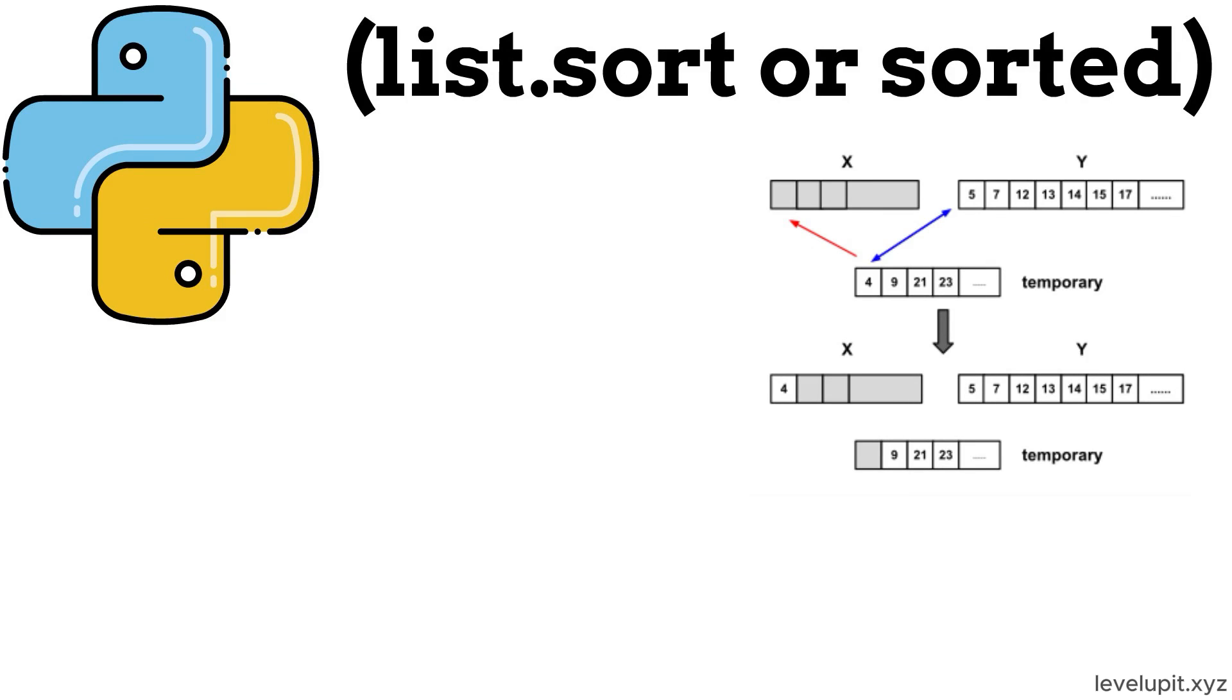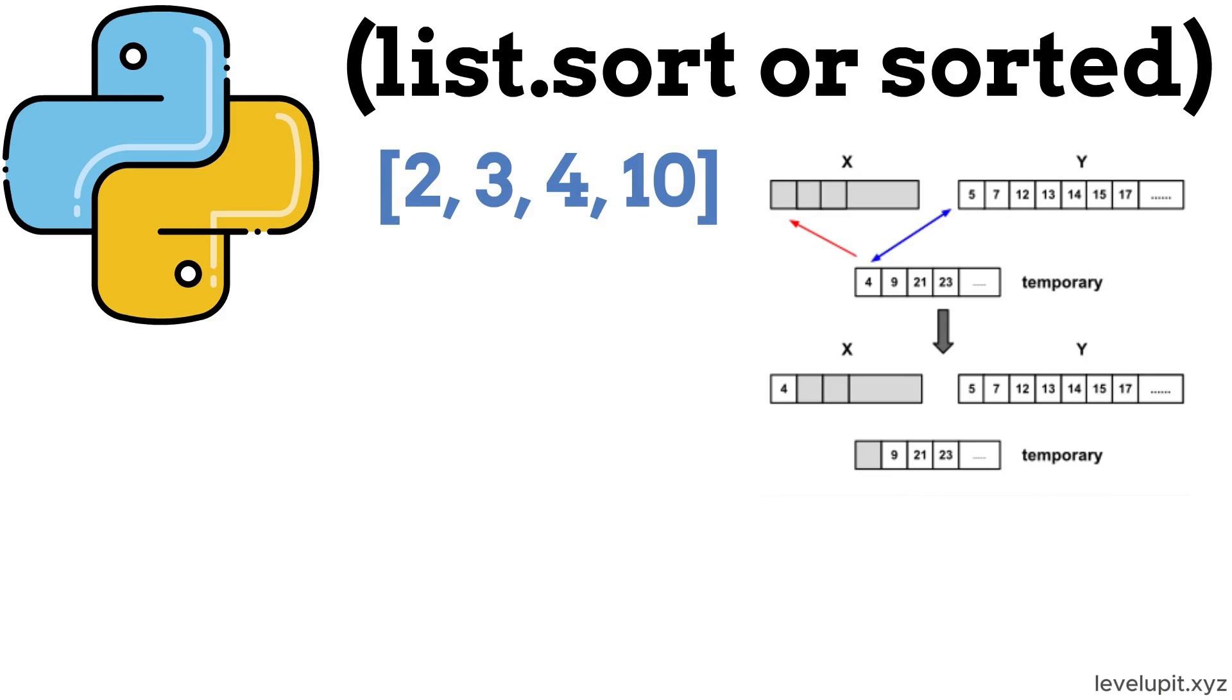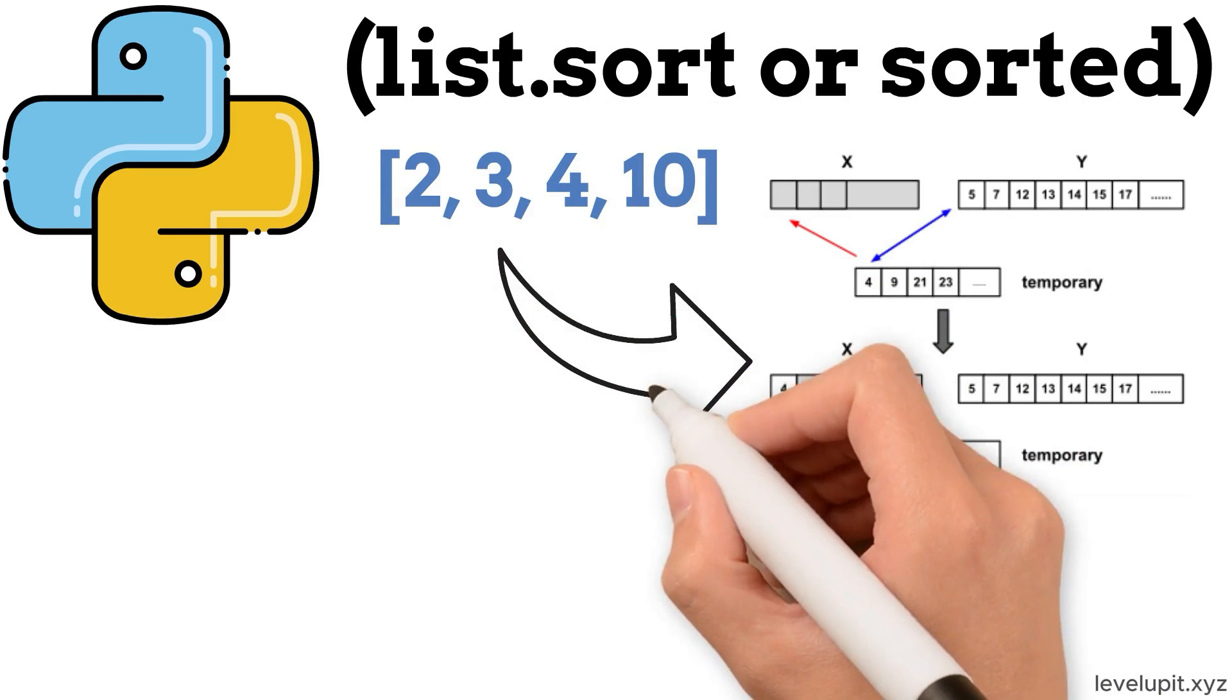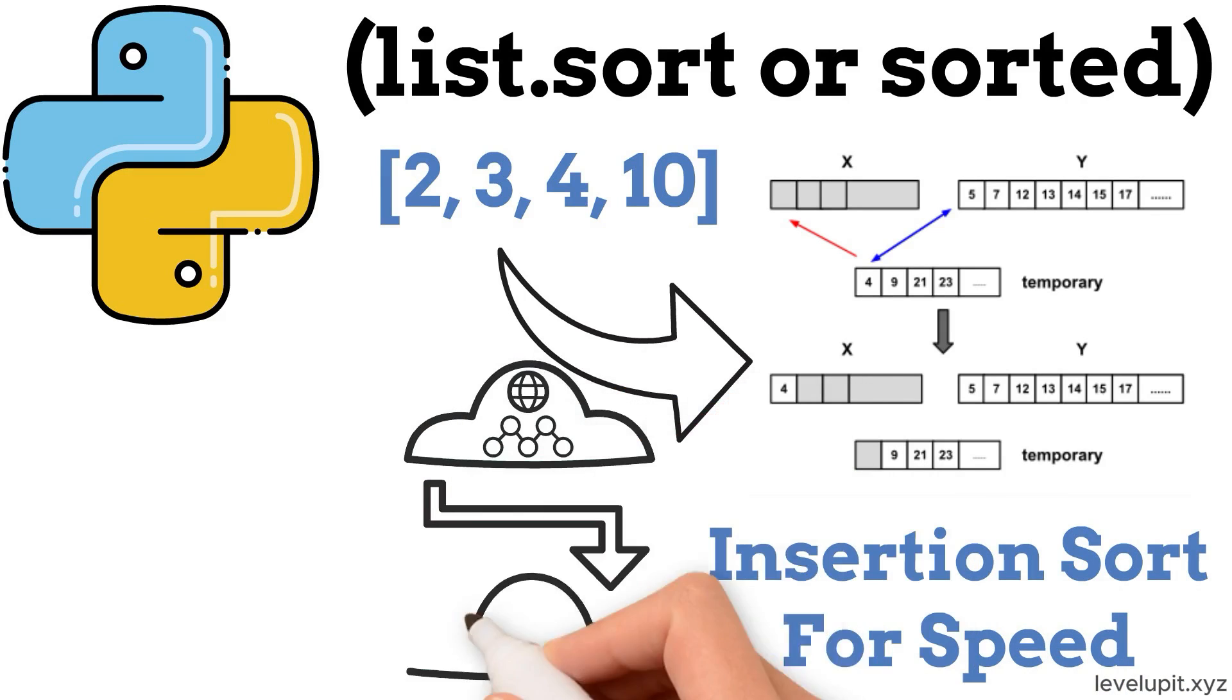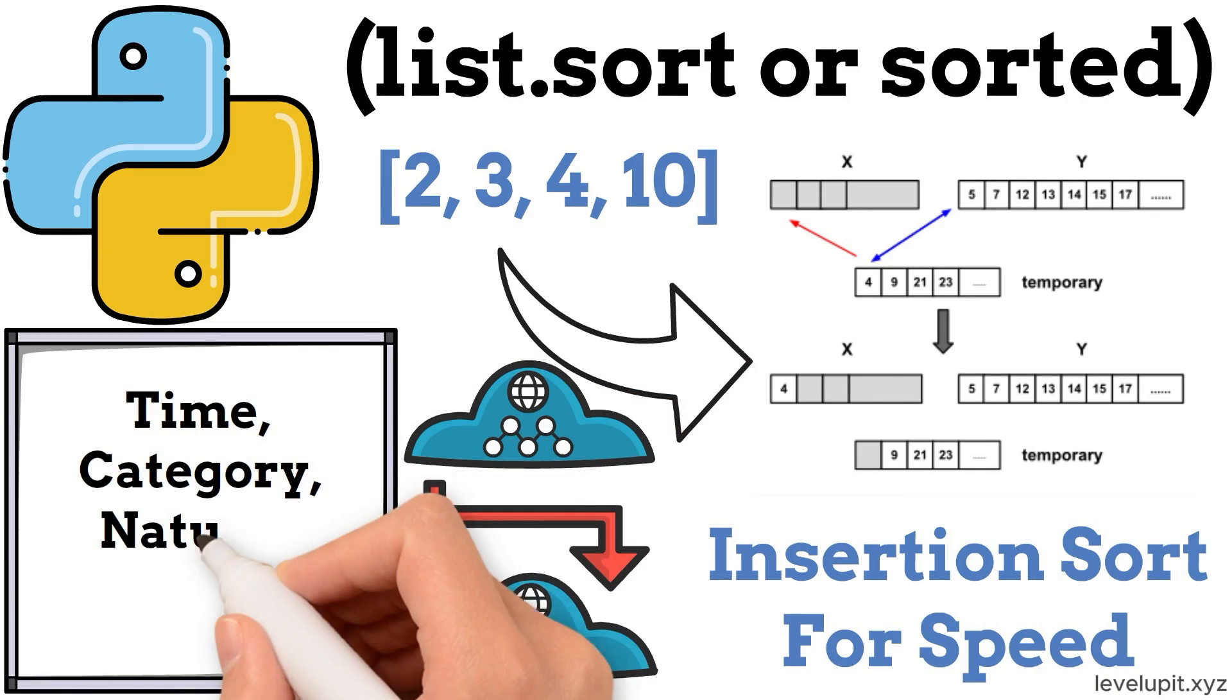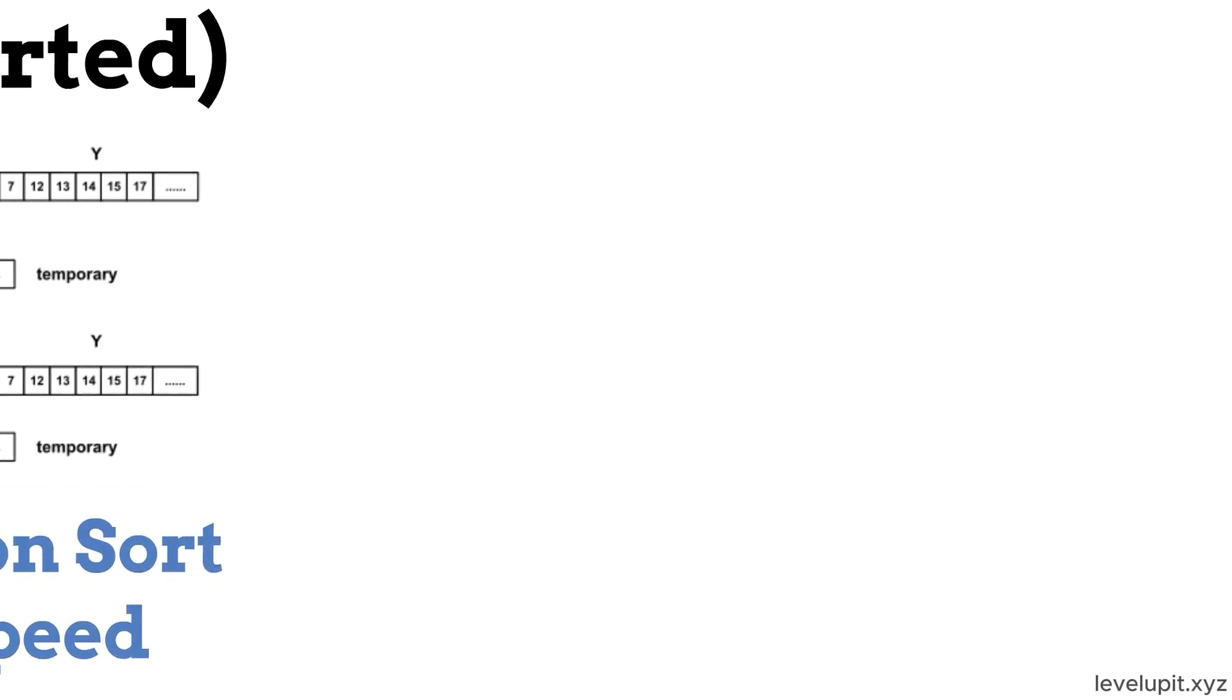Imagine the list 2, 3, 4, 1, 10, 6, 5, 8, 7. The first part is already a sorted run. TimSort identifies such runs, then merges them efficiently. And for small pieces, it uses insertion sort for speed. Real data often has ordered stretches by time, by category, by natural accumulation, and TimSort rides those patterns for speed.